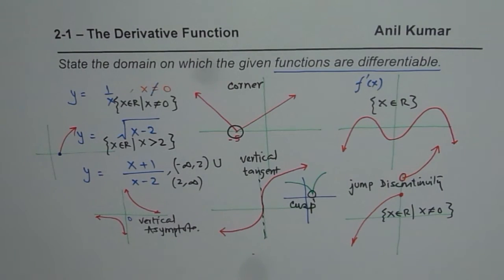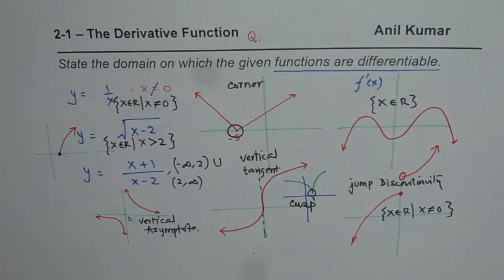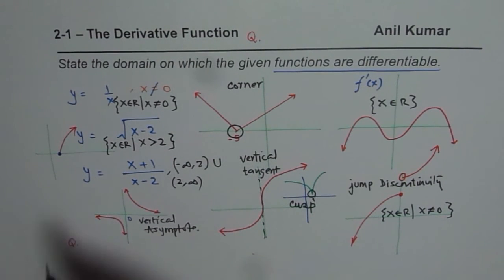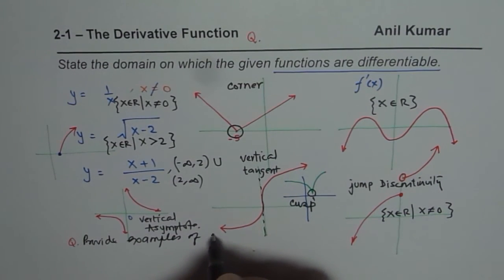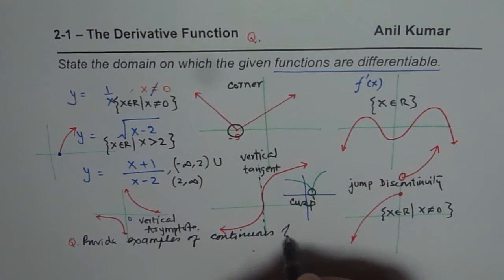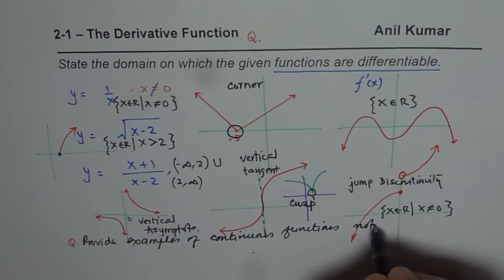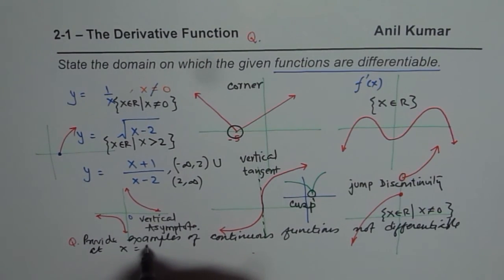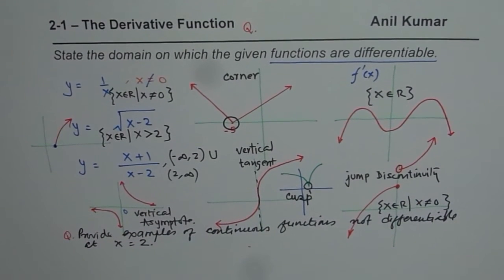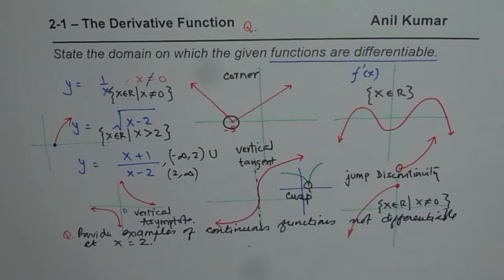I hope this video gives you a fairly good idea about understanding why a function may not be differentiable at certain points. The question for you is: provide examples of continuous functions which are not differentiable at x equals 2. There are quite a few hints on this sheet, so you can use them to answer this question. Thank you and all the best.